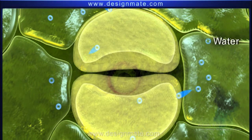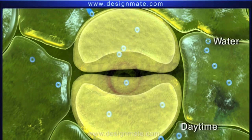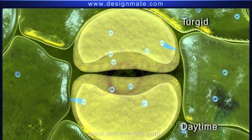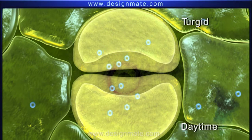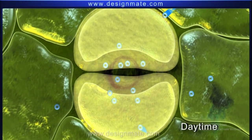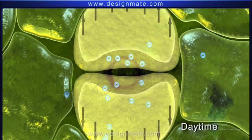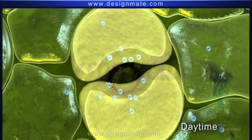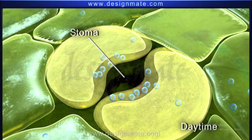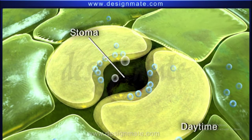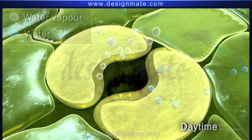During daytime, the guard cells absorb water from the surrounding epidermal cells and become turgid. As a result, the outer walls of the guard cells become more convex, pulling apart the inner walls. Thus, the stoma opens, expelling water vapor.